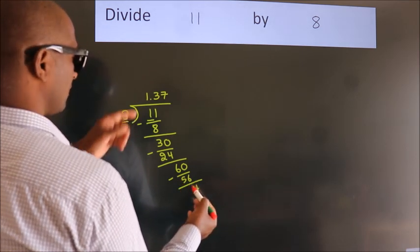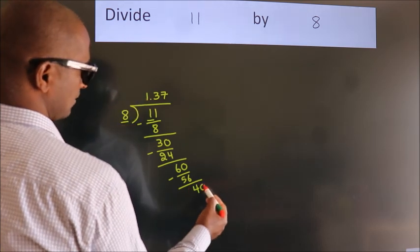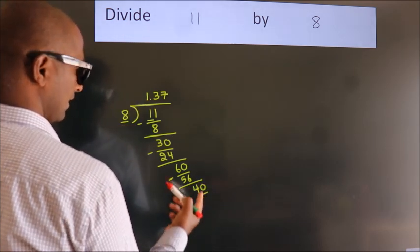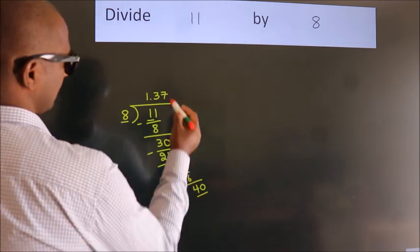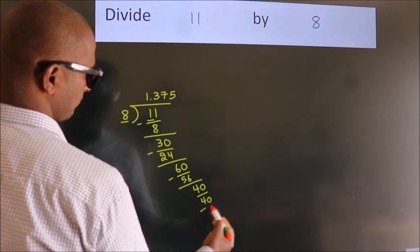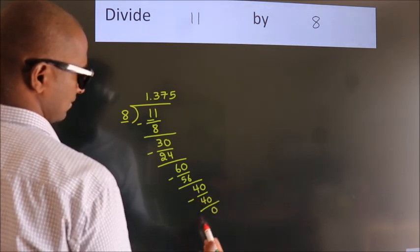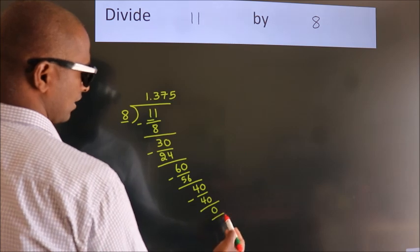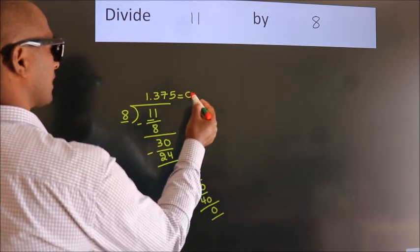After this, we already have the decimal, so directly take 0. So, 40. When do we get 40 in the 8 table? 8 times 5 equals 40. Now we subtract and get 0. Here we got remainder 0, so this is our quotient.